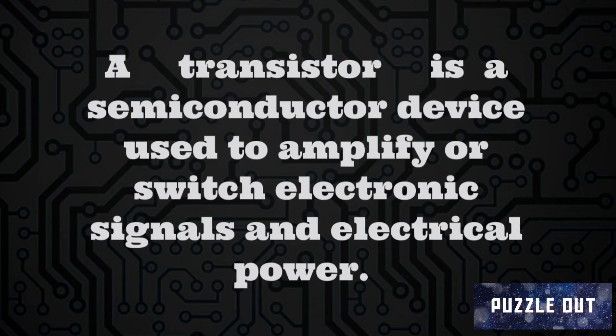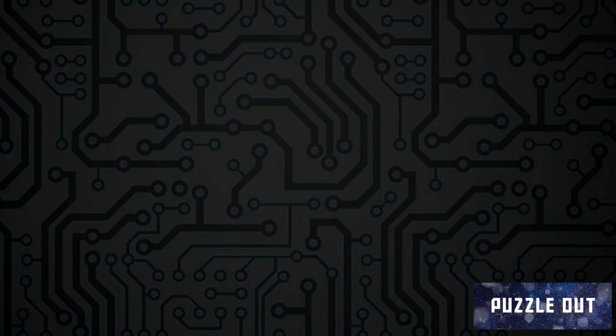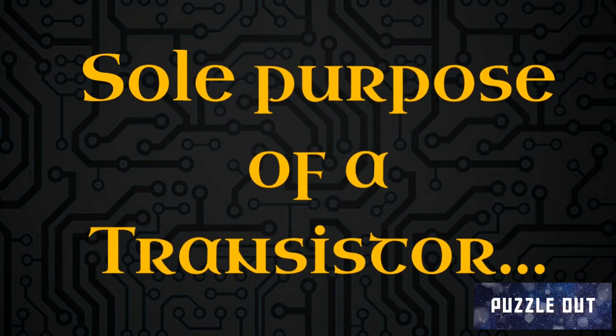A transistor is made up of a semiconductor device and has two main functions: amplification and switching. The sole purpose of a transistor is either switching or amplifying. By switching, the flow of current can be controlled, and by amplification, the amplitude of the output signal can be increased.